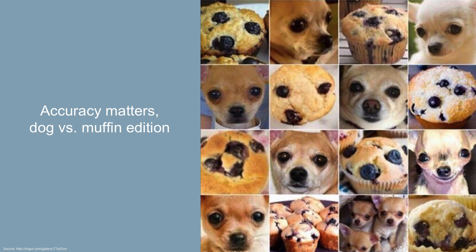We know this because of contests. Fei-Fei Li at Stanford set up ImageNet — a labeled set of many pictures — where computer algorithms compete with humans for accuracy. Humans are at about 95% accuracy, meaning 5% error. The best computer algorithms are now below 5% error and heading down. So given a picture and the question 'what is in this picture,' AI algorithms are already more accurate than most people.